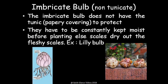The imbricate bulb does not have the tunic — the papery covering. This is the main difference between a tunicated and a non-tunicated bulb. Since there is no covering to protect, imbricate bulbs must be kept constantly moist before planting; otherwise the outer side becomes dry and injury may occur. An example is the lily bulb, which has no papery covering and must be kept moist before planting.